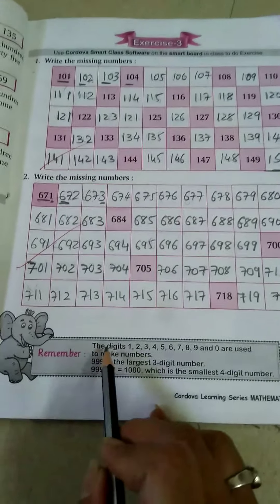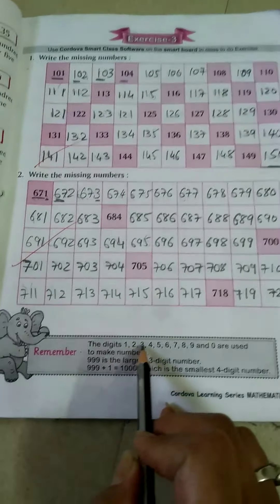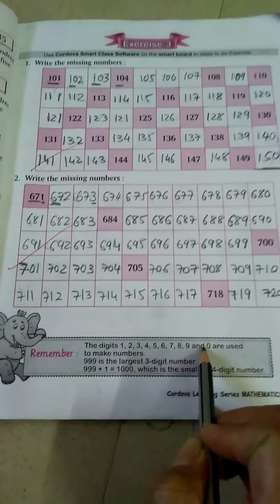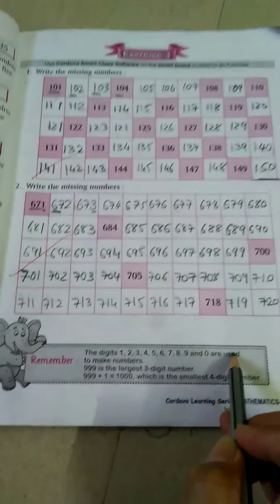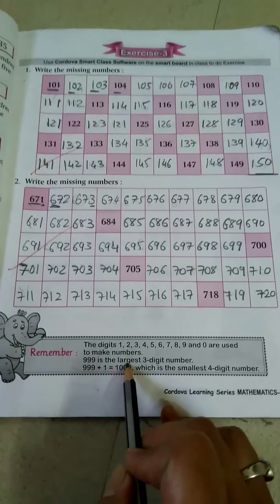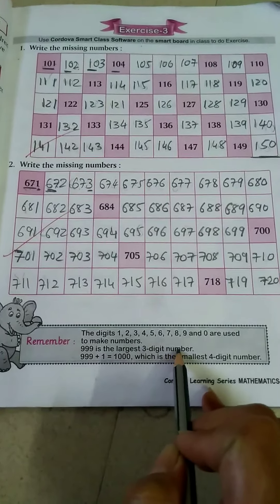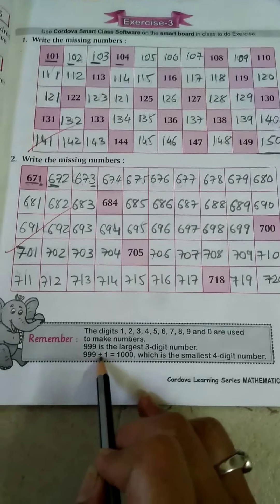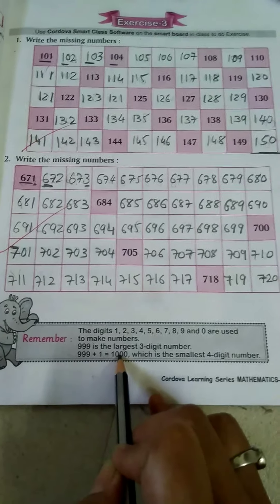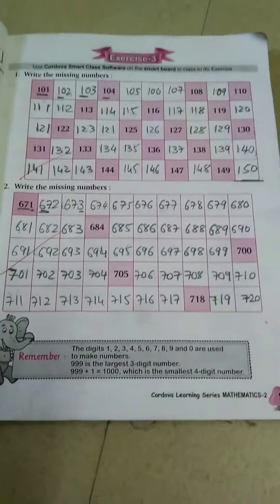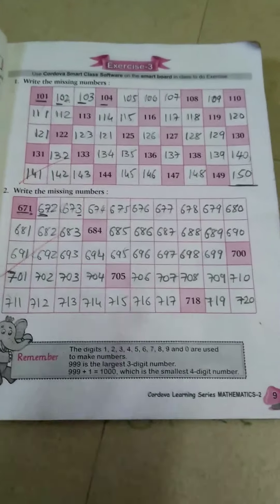Remember: the digits 1, 2, 3, 4, 5, 6, 7, 8, 9, and 0 are used to make numbers. 999 is the largest 3-digit number, and 999 plus 1 is equal to 1000, which is the smallest 4-digit number. Remember this and learn well.